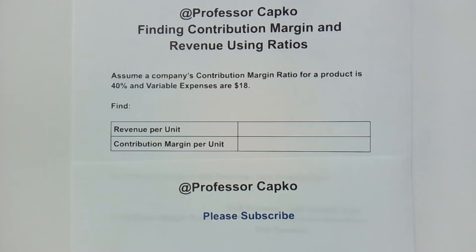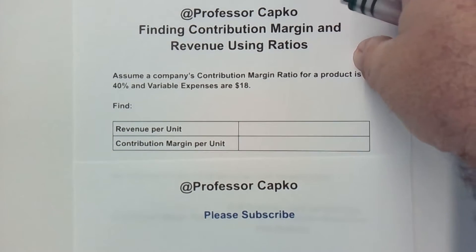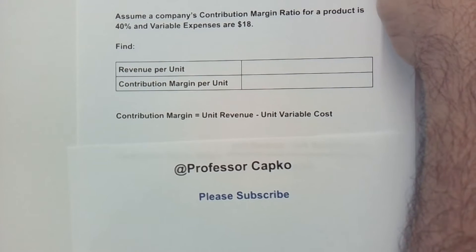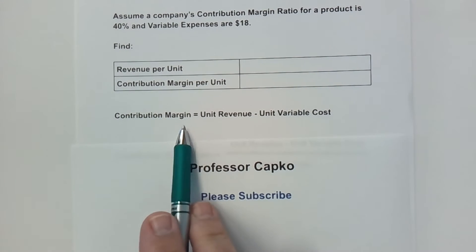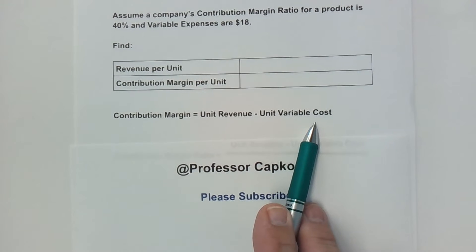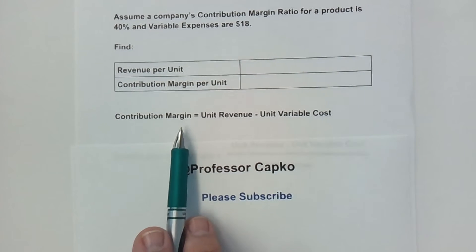How are you going to find that? We need to take a look at the ratios and the formulas for these items. First we're going to look at the contribution margin is equal to the unit revenue minus the variable cost.